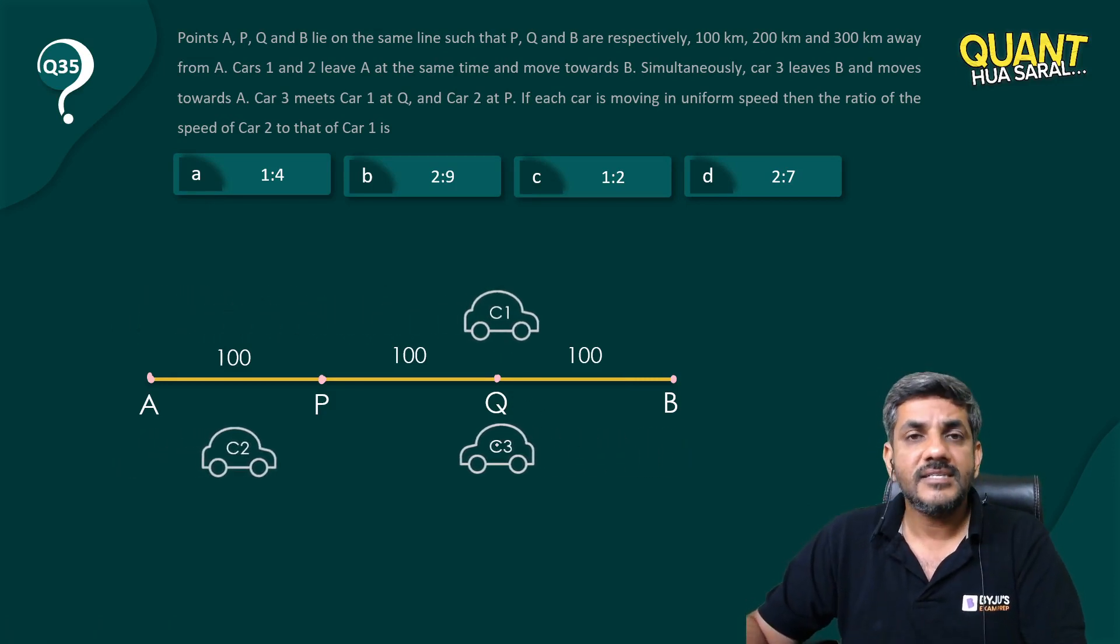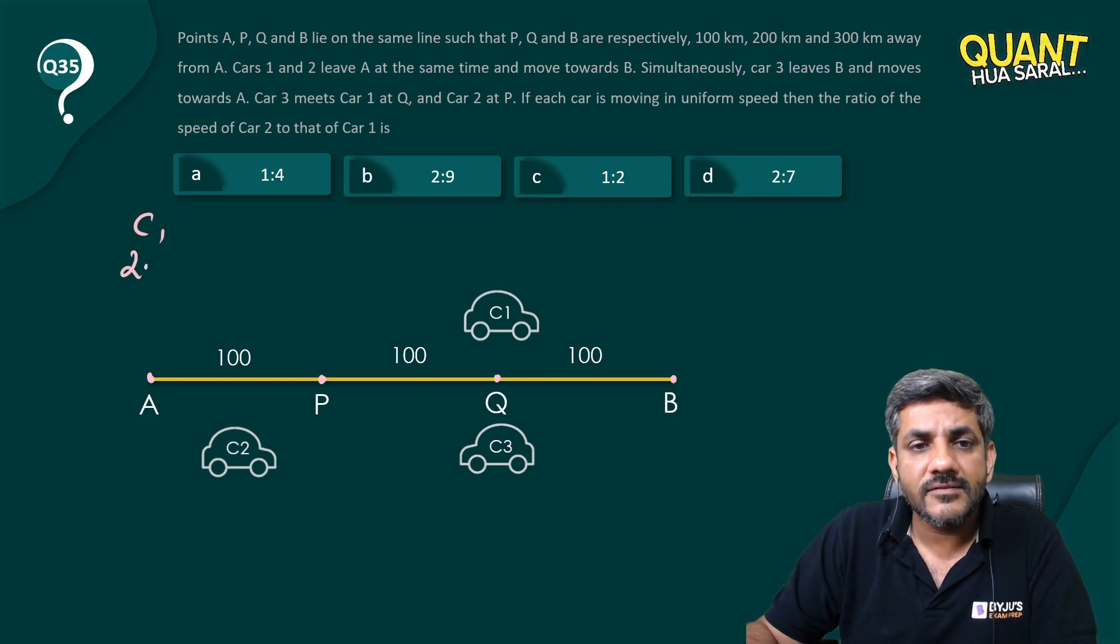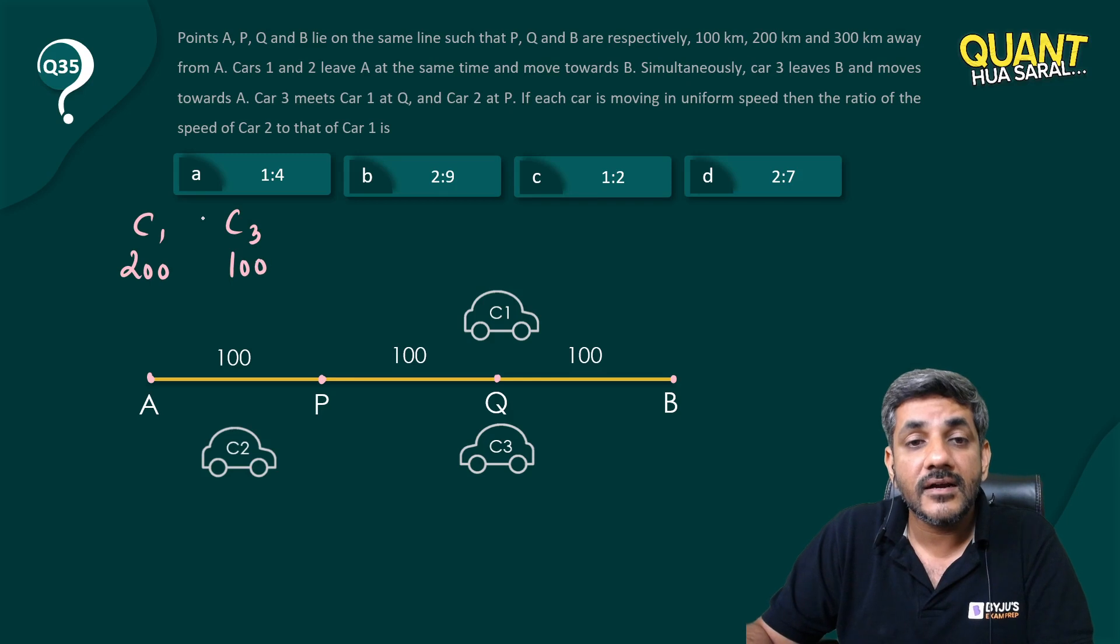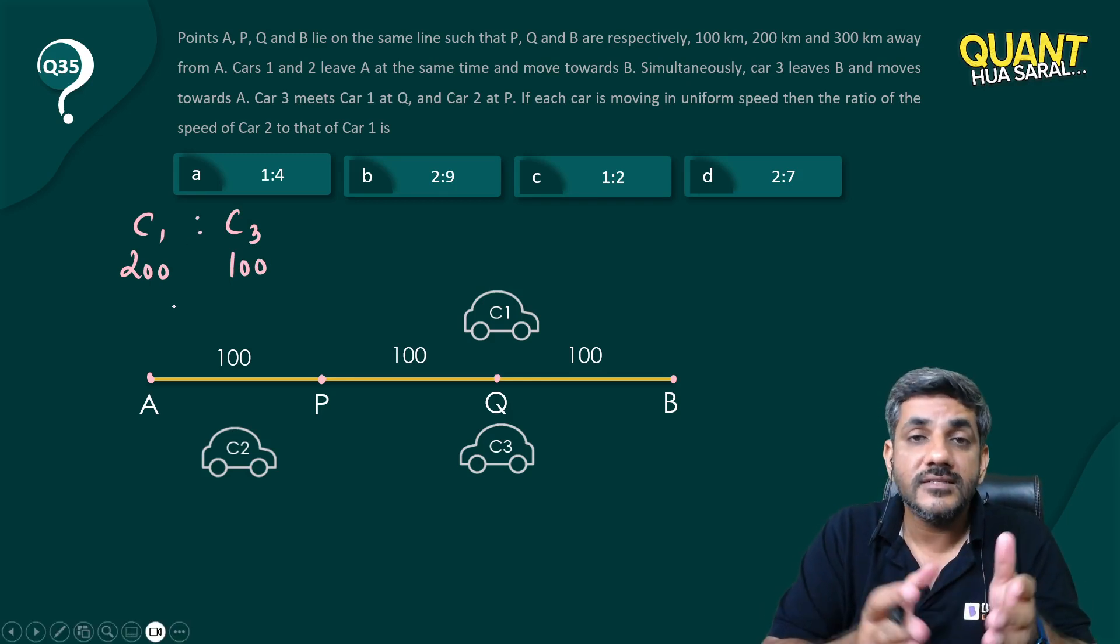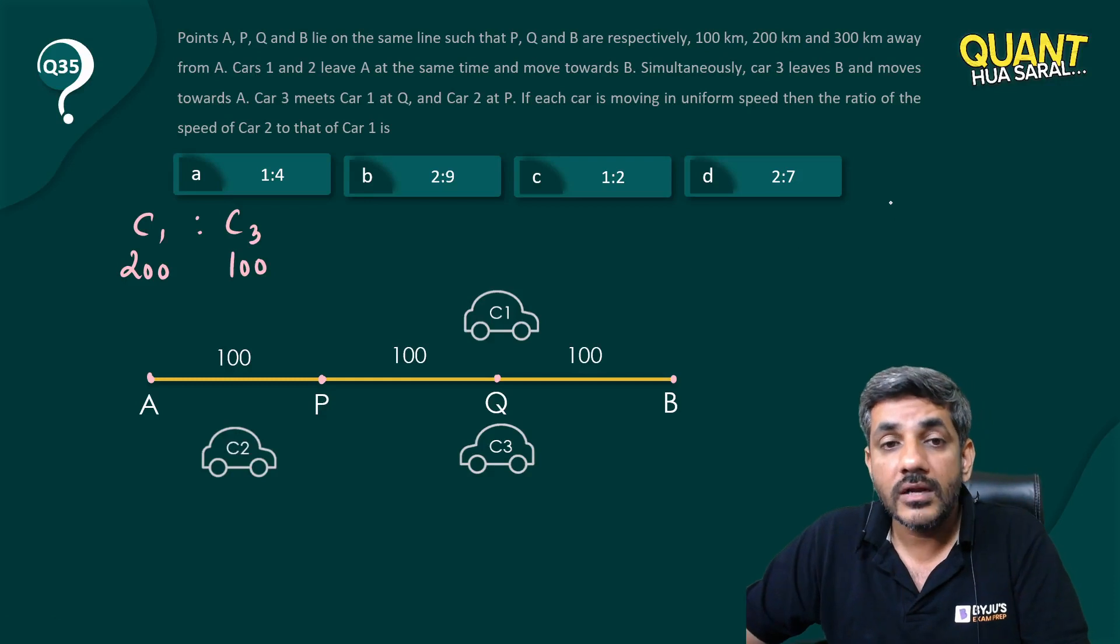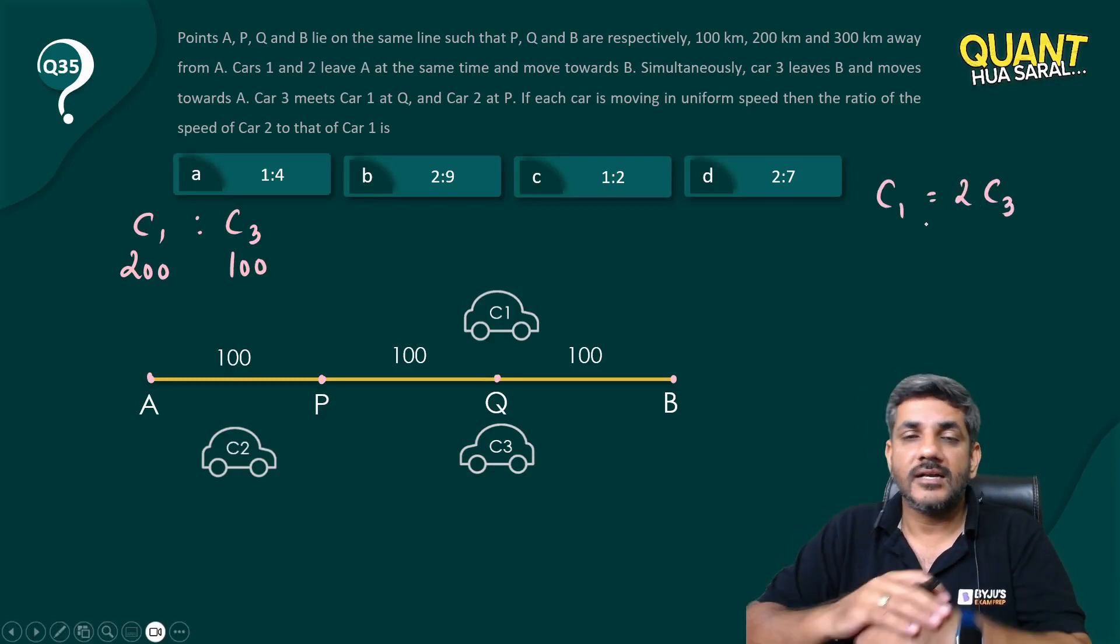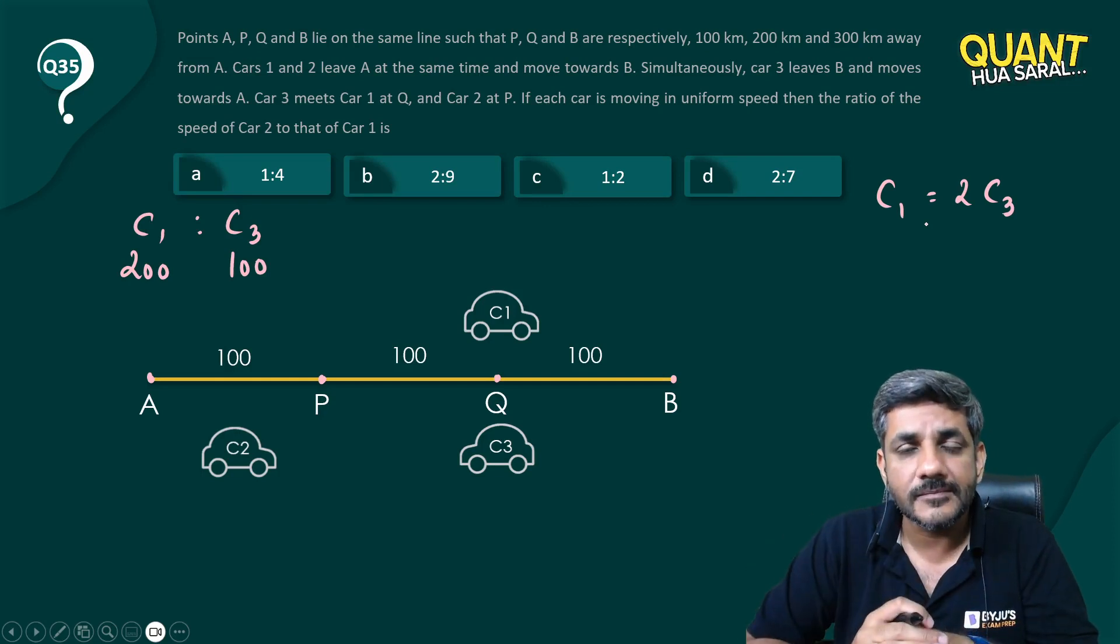When car 1 has covered 200, in the same time car 3 has covered 100. So when the time is same, the ratio of their distance is the ratio of their speeds, or speed of car 1 is twice of car 3. That is the first situation.